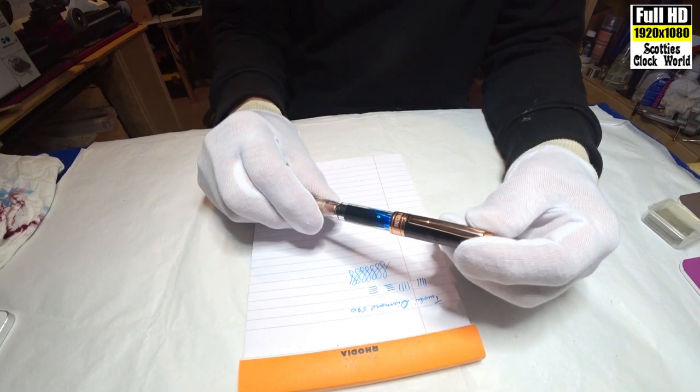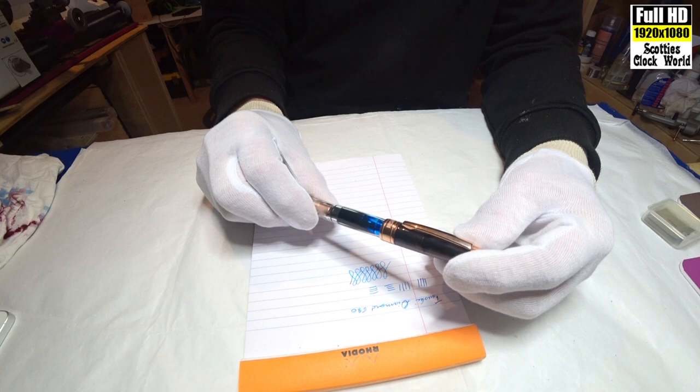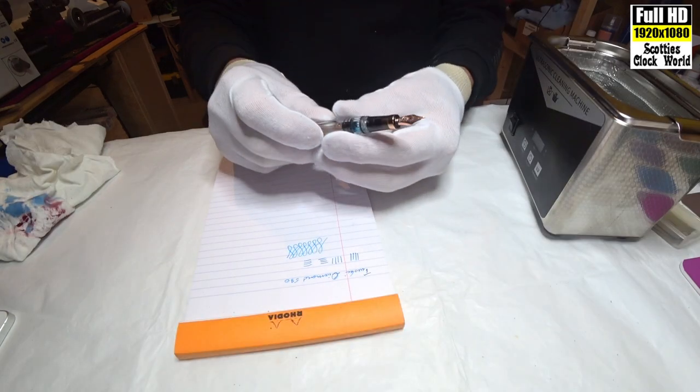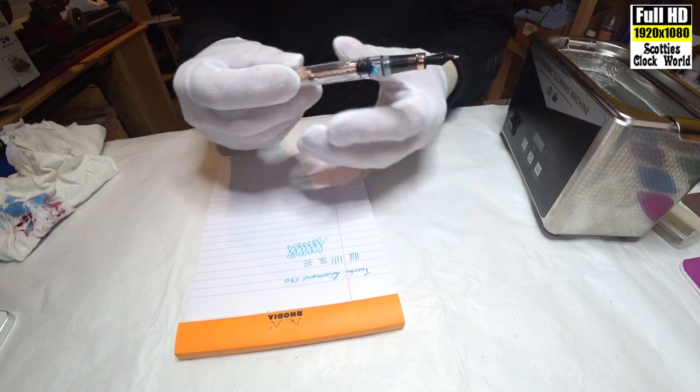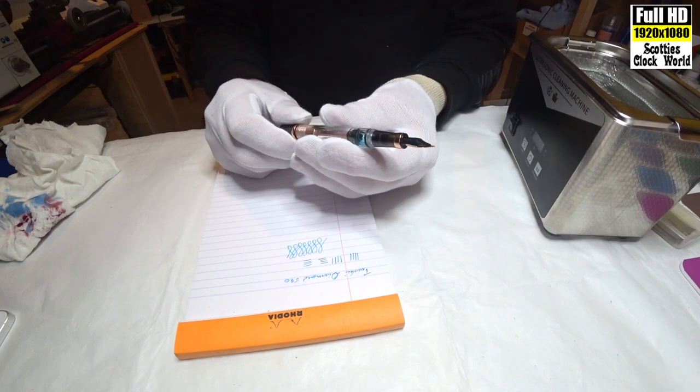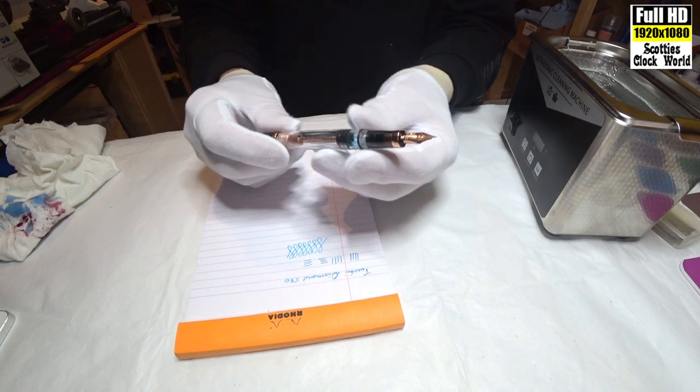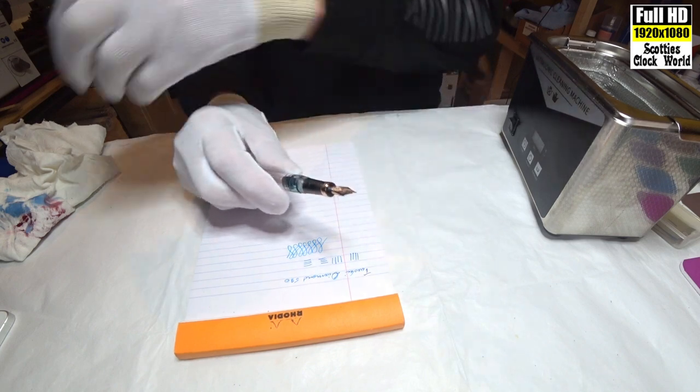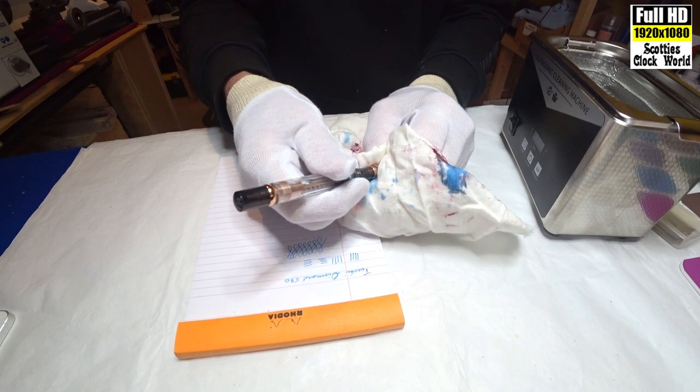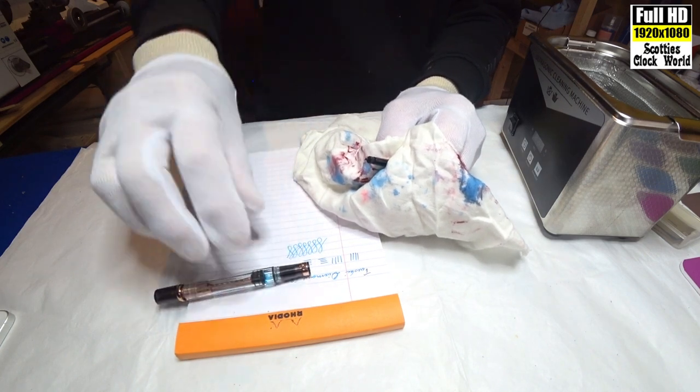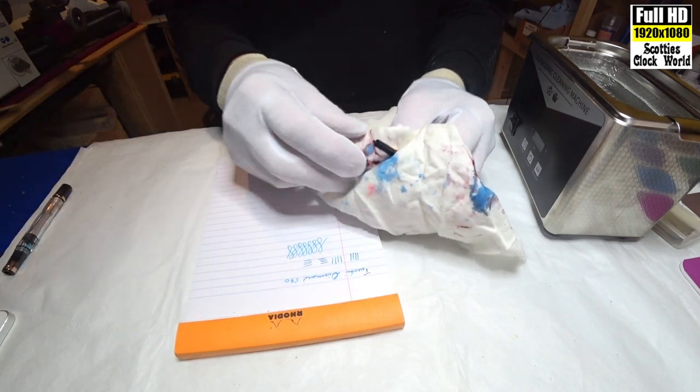Alright, let's get the nib out so we can repair it. I've cleaned most of the ink out of the pen. It's a little bit caught in the barrel there. I'll remove the nib and the feed by pulling them straight out. Put the barrel aside.